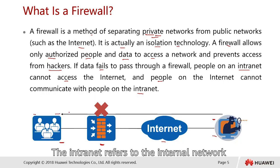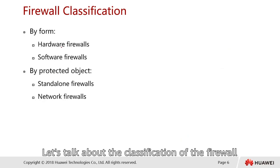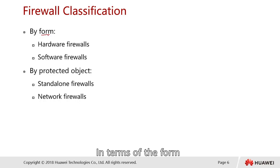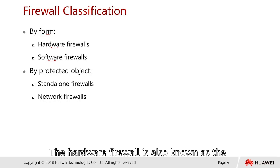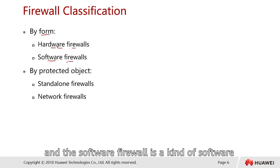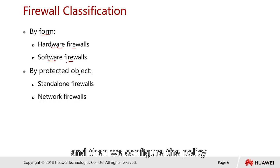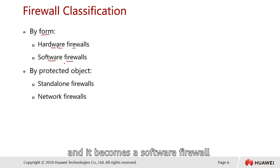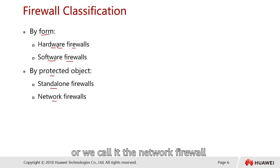In terms of form, a firewall can be a hardware firewall — also known as an appliance firewall — or a software firewall, which is software installed on top of an operating system that is configured with policies. By protected object, a firewall can be classified as a standalone firewall or a network firewall.